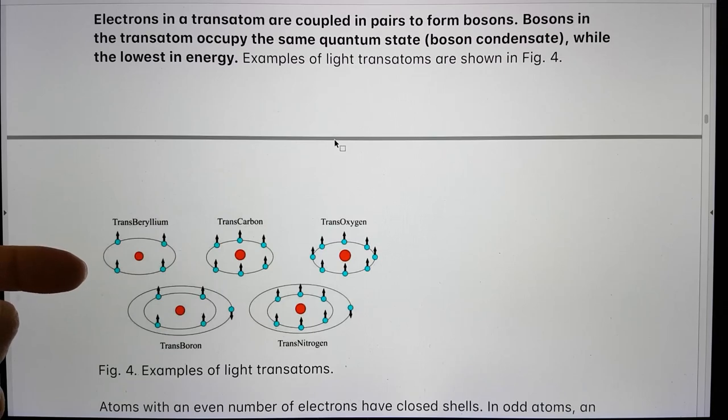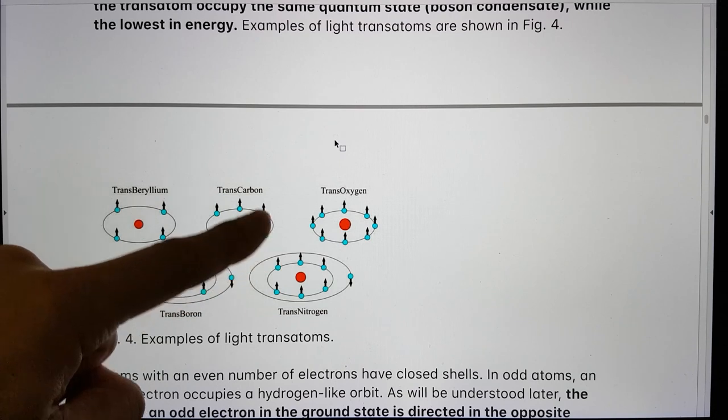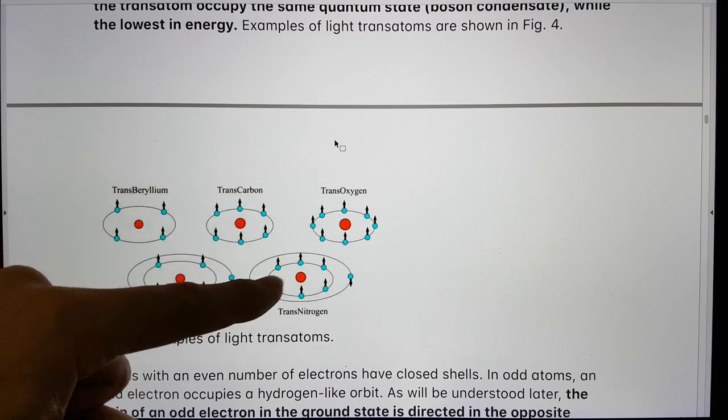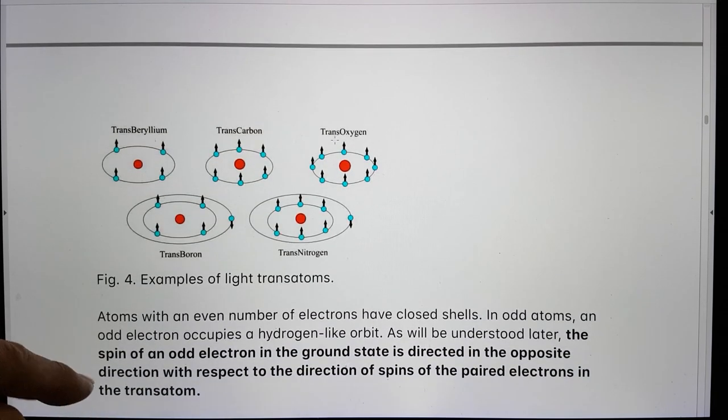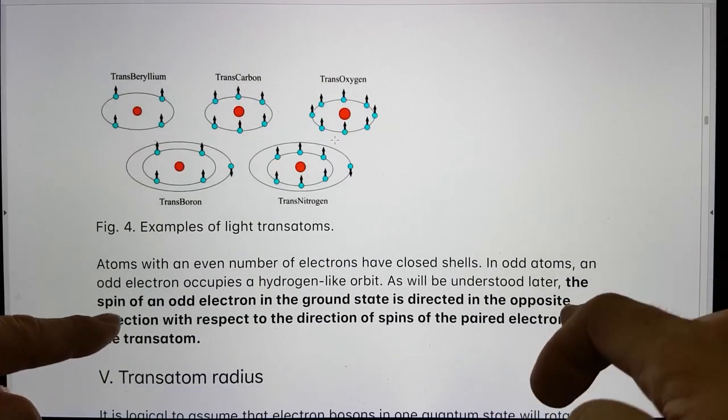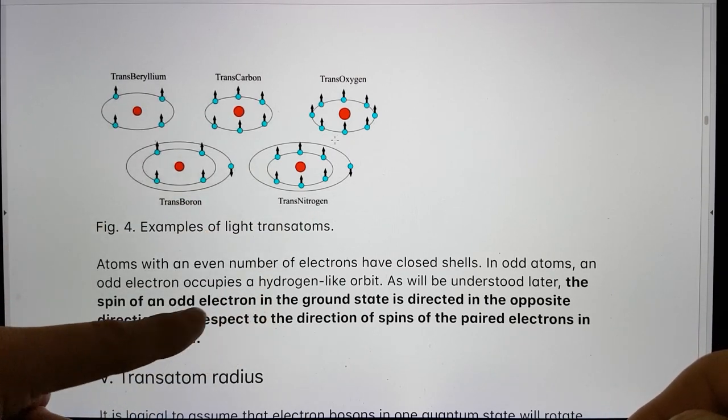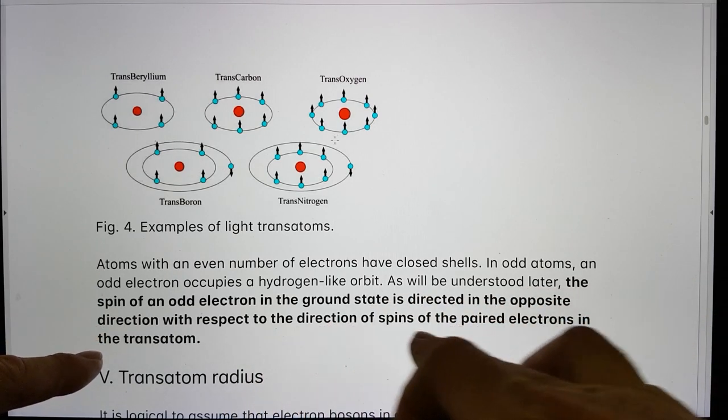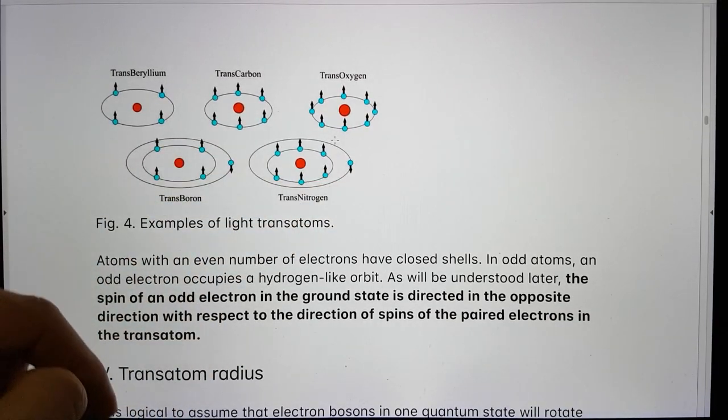It gives a range of light transatoms here, like transberyllium, transcarbon. So you've got your six electrons from your carbon atom with all the spins aligned, transoxygen with the eight, transboron. And so what you're seeing here is, the spin of an odd electron, for instance, for boron or nitrogen, in the ground state is directed in the opposite direction with respect to the direction of the spins of the paired electrons in the transatom. So the odd one goes down.